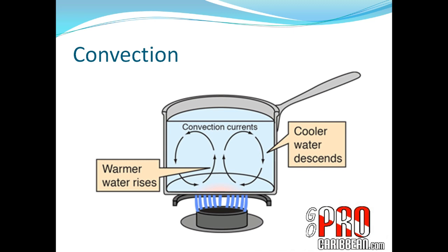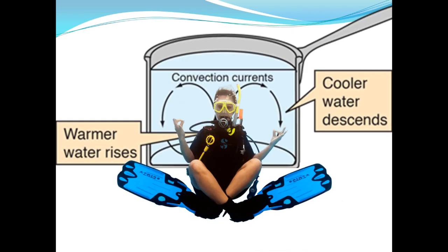Considering convection — a flame transmits heat to a liquid, the heat is conducted through the base of a metal pan, and as the water is warmed at the bottom, the warm water rises and is replaced by cooler water, creating convection currents. Replace the flame with yourself as the heat source — the water your body warms through conduction is moved away through convection, replaced by cooler water that your body then heats again through conduction, and so on.